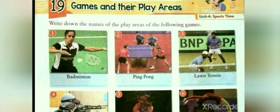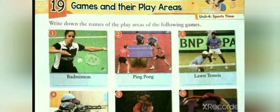In the first picture, we can see the sport badminton, and badminton is played in the play area called court. We will write in the space given: court. In the second picture, we can see the game ping pong, and ping pong is played in the play area called table. We will write in the space given: table.